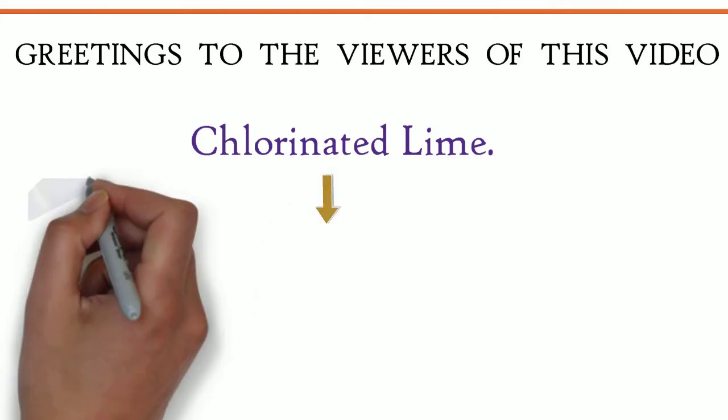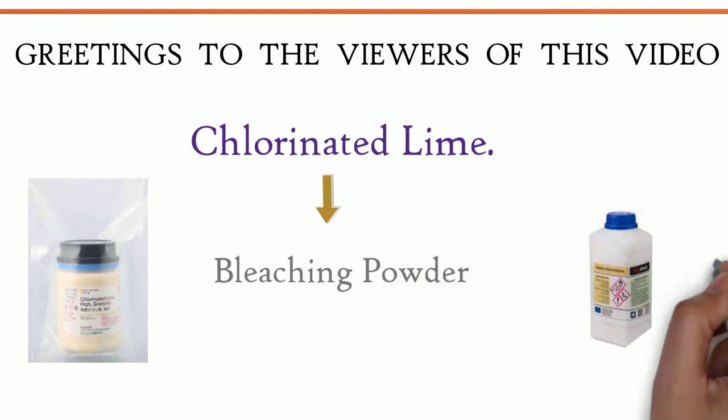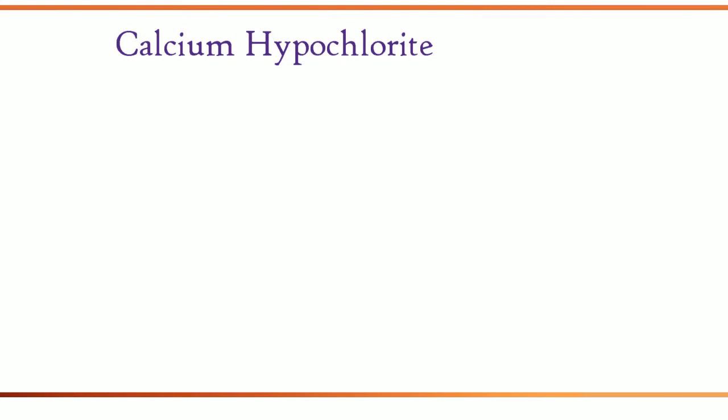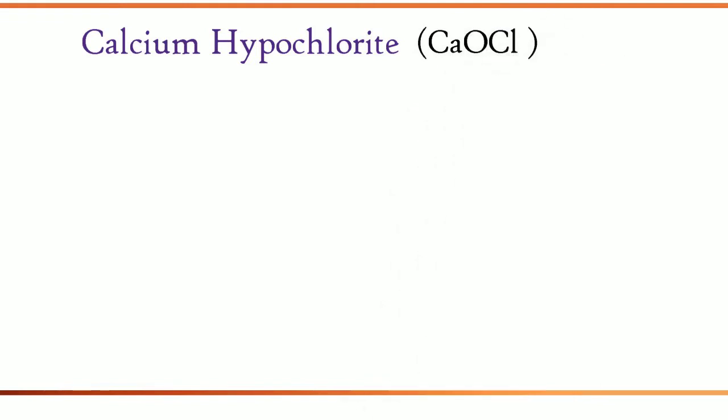It is otherwise known as Bleaching Powder. The chemical name for this compound is Calcium Hypochlorite. The chemical formula of bleaching powder is CaOCl2.